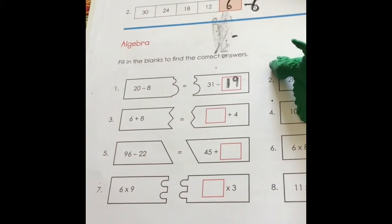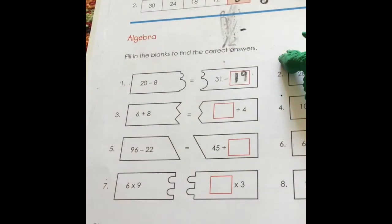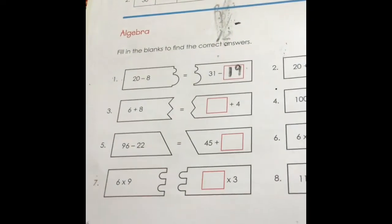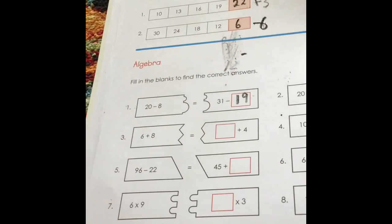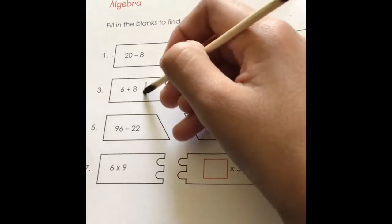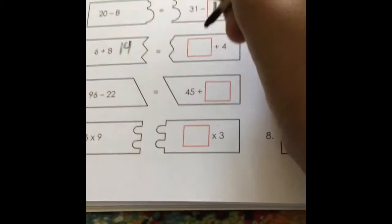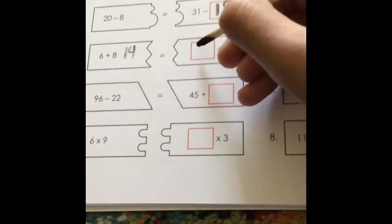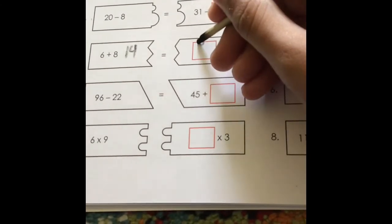6 plus 8 equals 14, and this equals 14. And something plus 4 equals 14. That is 14 take away 4, and that equals 10.